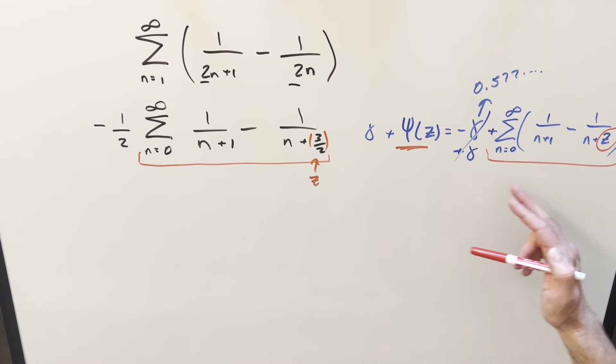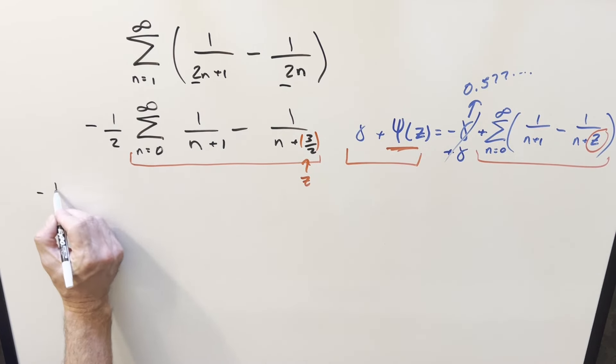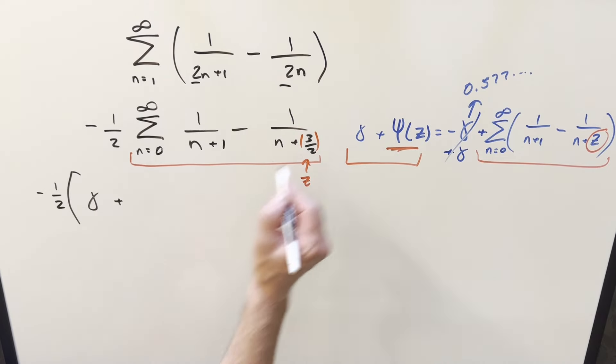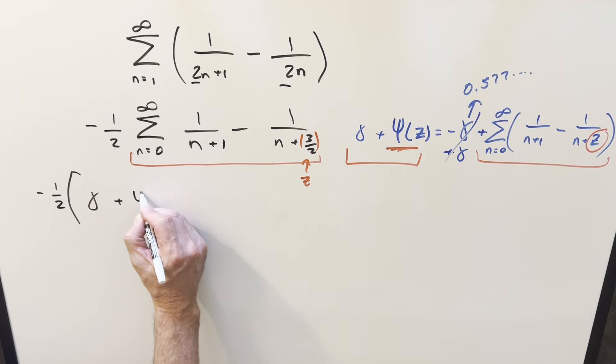And so by isolating this, now we can express our sum over here in this form right here. So doing that, I'll just bring down the minus 1 half. And then let's see, we're going to have the Euler-Mascheroni constant plus gamma of our input z. So it's just going to become, not gamma, digamma of 3 halves.